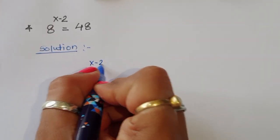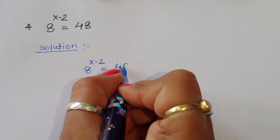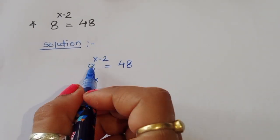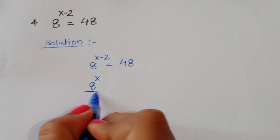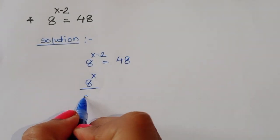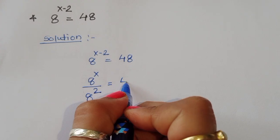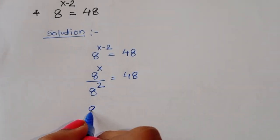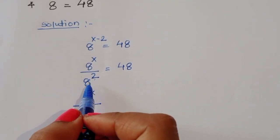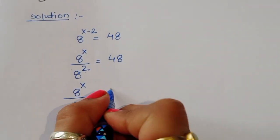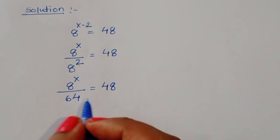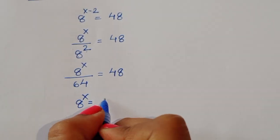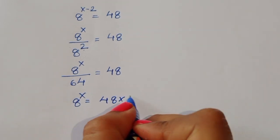8 power x minus 2 is equal to 48, so we can write this as 8 power x divided by 8 power 2. When it goes in the denominator, 8 power 2 is 64, so 8 power x divided by 64 is equal to 48. Doing cross multiplication, we get 8 power x is equal to 48 times 64.